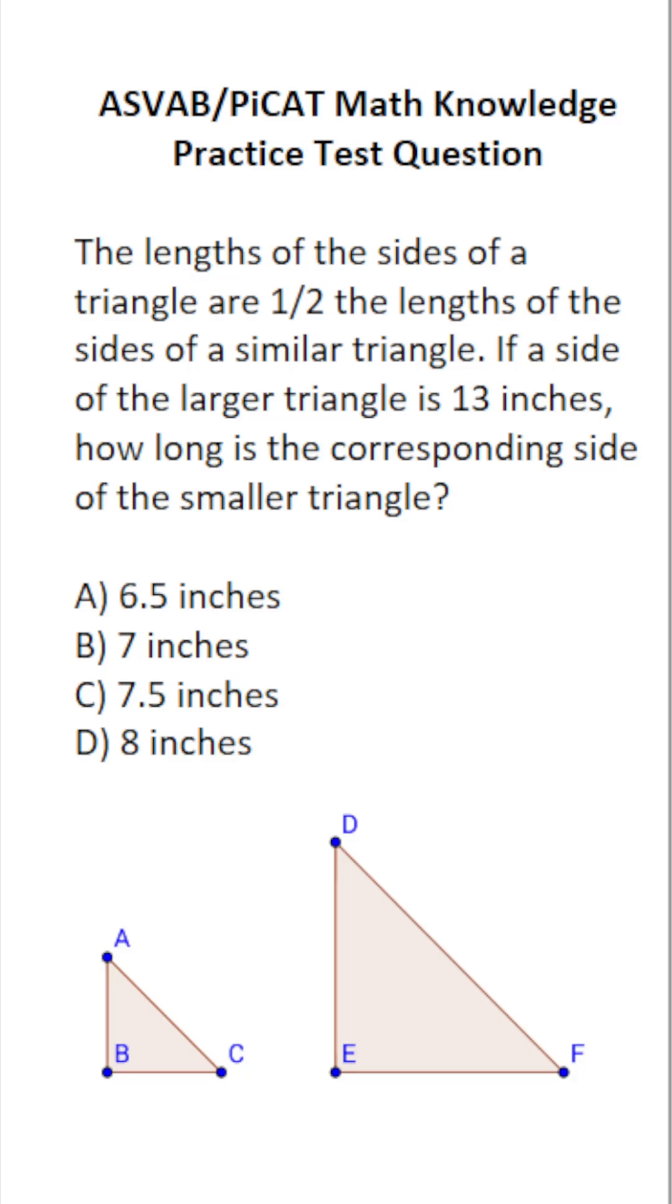This math knowledge practice test question for the ASVAB and PiCAT says, the lengths of the sides of a triangle are one half the lengths of the sides of a similar triangle. If a side of the larger triangle is 13 inches, how long is the corresponding side of the smaller triangle?